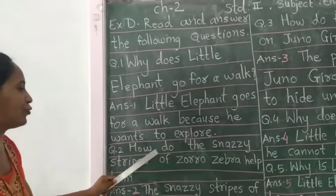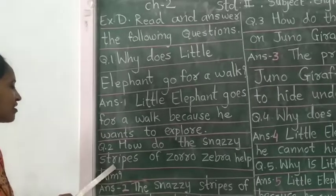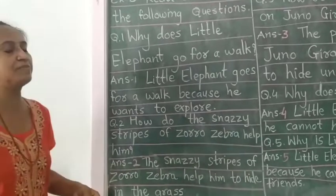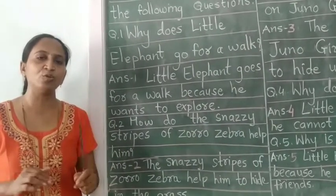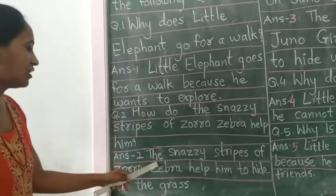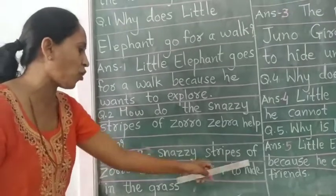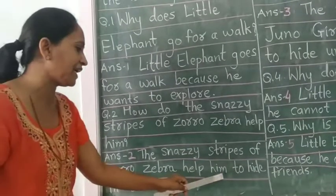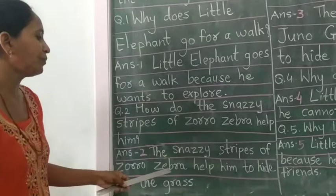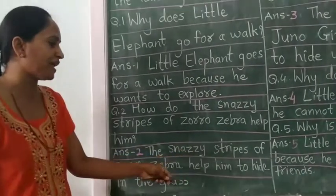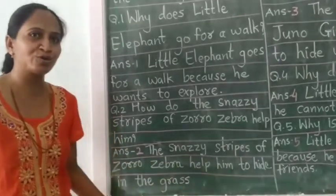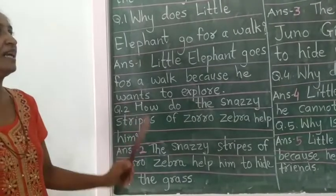Second question: how do the snazzy stripes of Zoro Zeta help him? Zoro Zeta के ऊपर जो snazzy stripes थी वो उसे कैसे help कर रहे? Answer two: the snazzy stripes of Zoro Zeta help him to hide in the grass। यानि Zoro Zeta को उसकी stripes grass में छुपने के लिए help करती थीं।